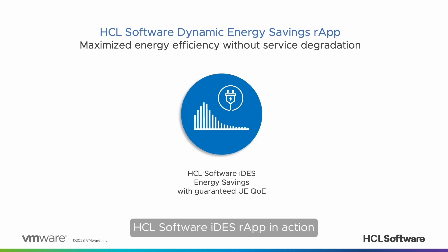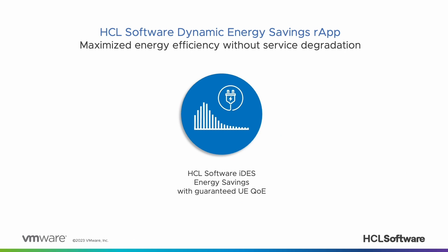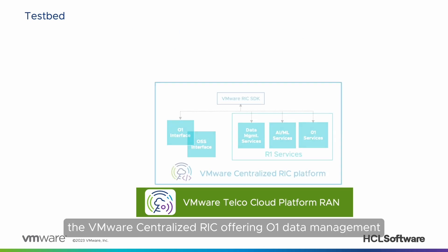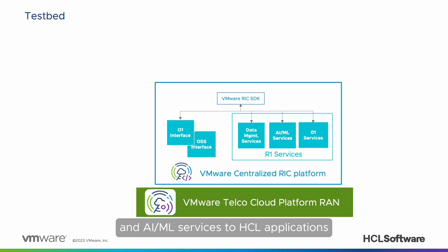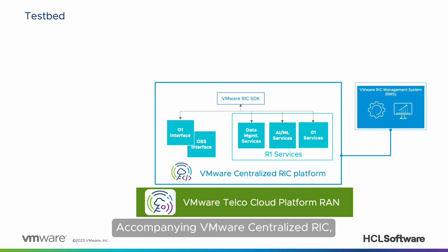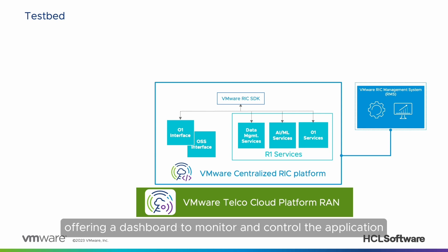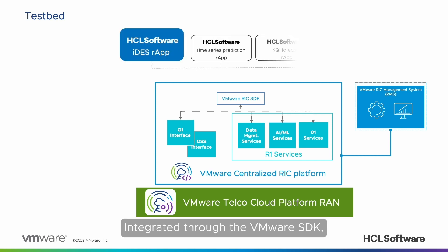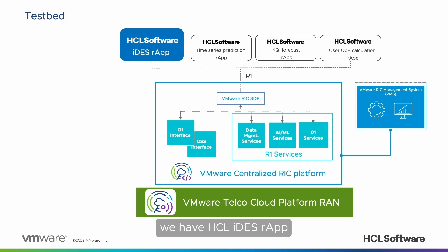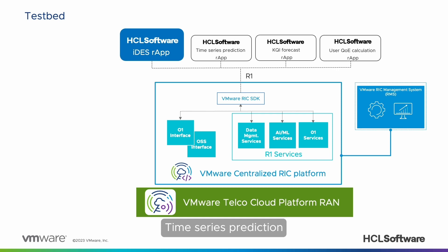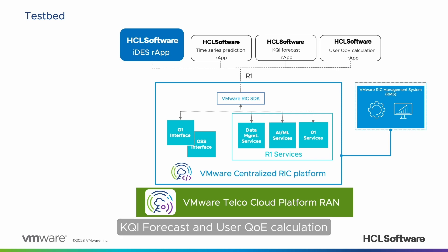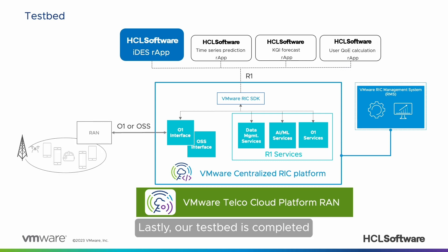Let's now see the HCL Software IDES R-App in action. Our testbed is composed of the VMware Centralized RIC, offering O1 data management and AIML services to HCL applications. Accompanying it, we have the VMware RIC Management System, or RMS, offering a dashboard to monitor and control the application. Integrated through the VMware SDK, we have the HCL IDES R-App and the three supporting HCL producer R-Apps: time series prediction, KQI forecast, and user QoE calculation. Our testbed is completed with a RAN network and user UE data.